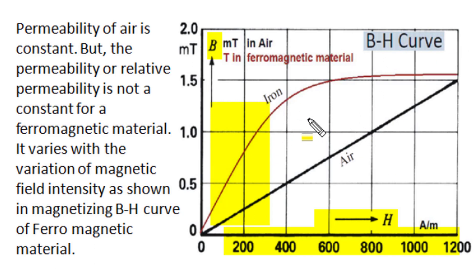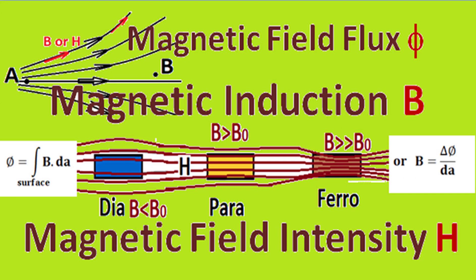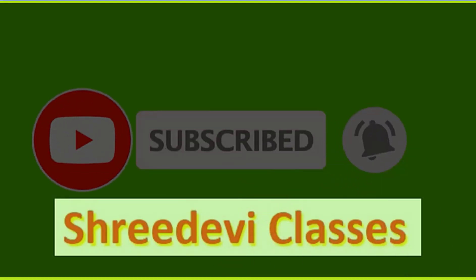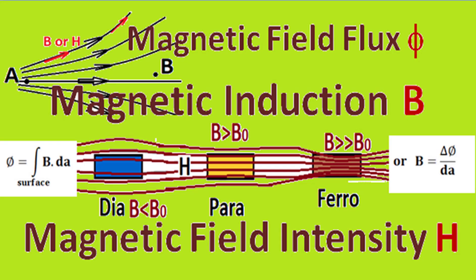In our next video, we will study the magnetizing characteristic of iron material in great detail. We hope this informative learning video has explained the three important magnetic parameters — magnetic field flux, magnetic induction, and magnetic field intensity — in good detail, along with their interrelationship and a brief idea of magnetic permeability. Our other learning videos in different playlists are very useful for electrical engineering preparation and professional practice. If you find these learning videos useful, do share them with your friends. Happy learning. Have a nice time. Thank you very much.